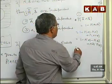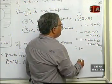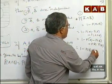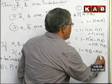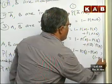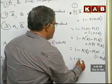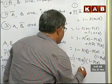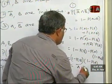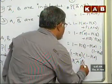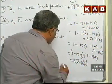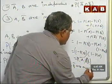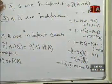So we have 1 minus probability of A minus probability of B plus probability of A into probability of B. Taking probability of A common, then pulling out 1 minus probability of B, we get probability of 1 minus probability of A into 1 minus probability of B, which is probability of A̅ into probability of B̅. That implies A̅ and B̅ are two independent events. This completes the first part.